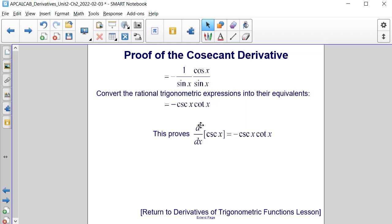This proves that the derivative with respect to x of cosecant x is equal to negative cosecant x cotangent x.